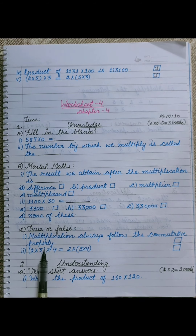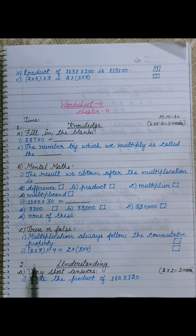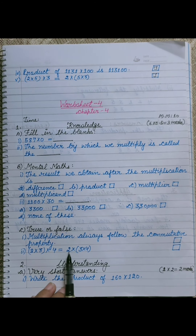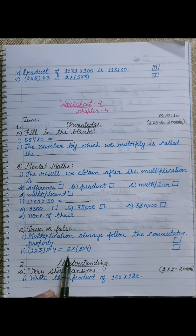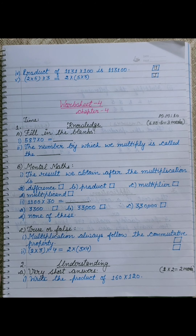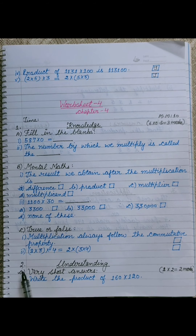True or false: first, multiplication always follows the commutative property — a into b equals b into a, 2 into 3 is 6, 3 into 2 is 6, so it is true. Second: 2 into 3 in brackets into 4 equals 2 into 3 into 4 in brackets — left side has first two in brackets, right side has last two in brackets, but answer remains same. This is the associative property. If you don't know the properties of multiplication, learn and understand them first before solving the worksheet. It is also true.